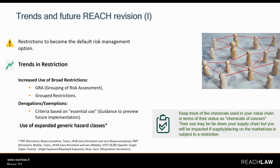The scope may also be expanded to include professional users, so again a significant broadening in scope. We're also likely to see more group restrictions, like the universal PFAS restriction or the bisphenols restriction. For derogations and exemptions from restrictions, the essential use concept may be implemented, and we will get a sneak preview in the guidance on essential use the Commission has said it will publish later this year. The main thing to keep in mind is to keep track of the chemicals in your value chain in terms of their status as chemicals of concern.